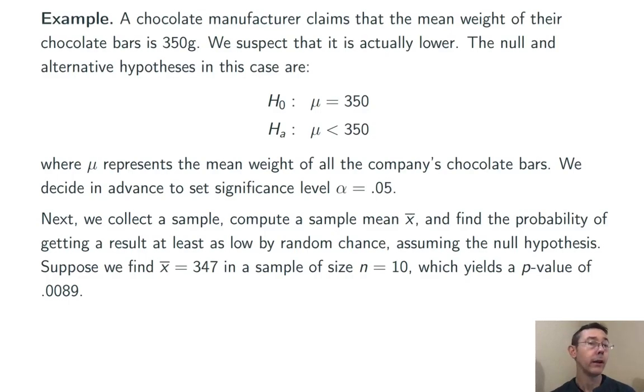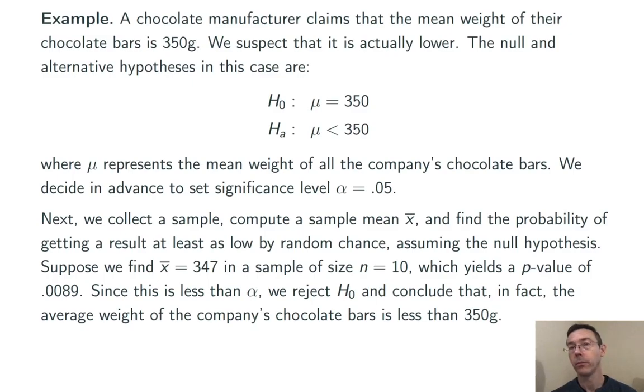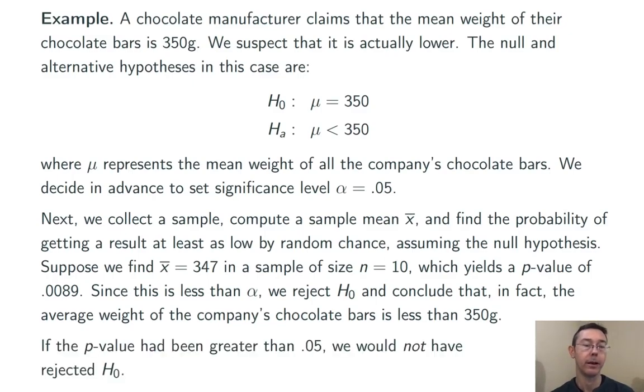So suppose we go out and get a sample of size 10 and find a sample mean of 347 grams. As we saw in a previous video, that leads to a p-value of 0.0089. Of course, 0.0089 is less than 0.05, so p is less than alpha in this case. And therefore, we reject the null hypothesis and conclude that, in fact, the average weight of all the company's chocolate bars is less than 350 grams.